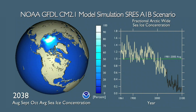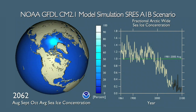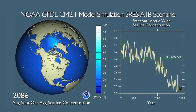Though some uncertainties in the model projections of future climate remain, results such as these, taken together with observations that document late 20th century Arctic sea ice reductions, make the Arctic a region that will continue to be studied and watched closely as atmospheric greenhouse gas levels increase.